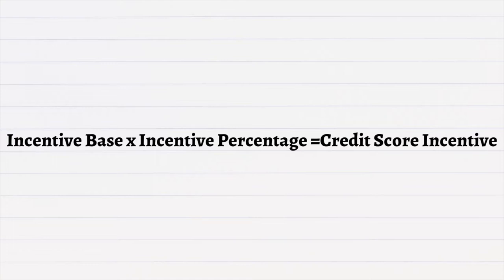Now that we know your base rate is stable and will not change, take out a piece of paper and something to write with. All of GoGoKid's incentives are based around this formula: your incentive base multiplied by your incentive percentage equals your credit score incentive. If that just went over your head, that's okay — I'm going to explain what these terms mean.